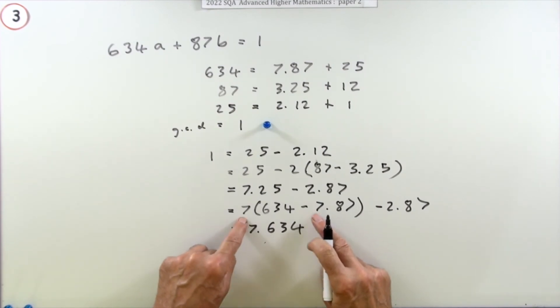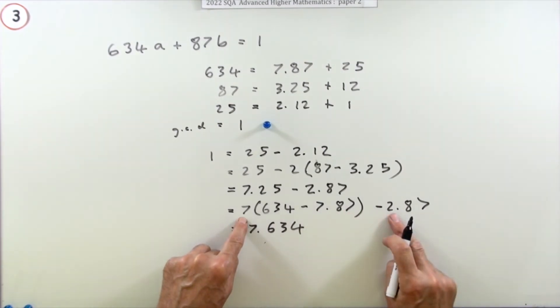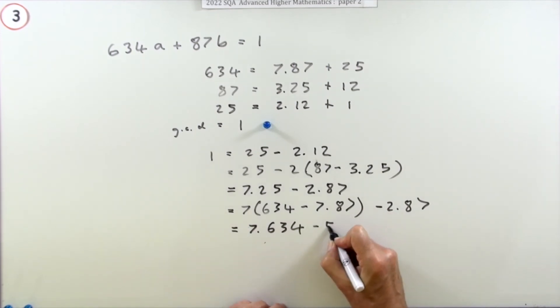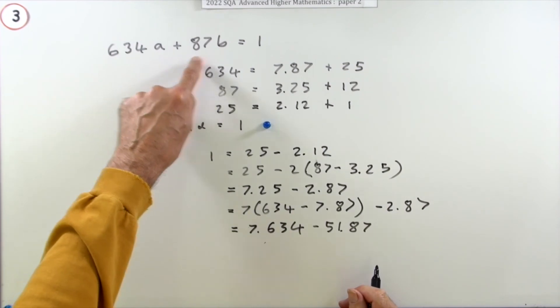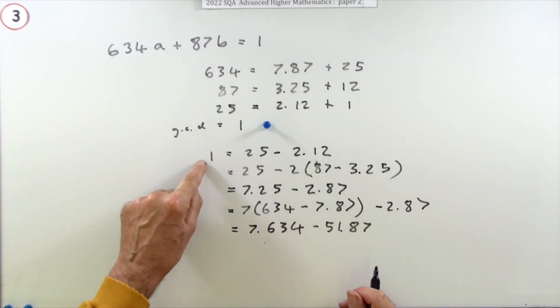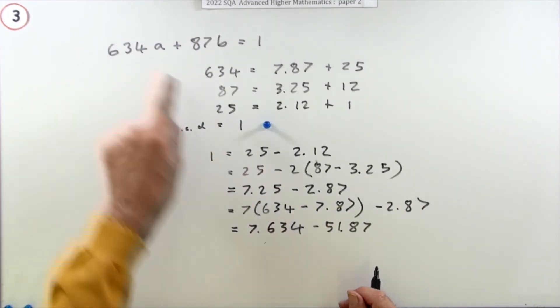I can tidy that up. I've got 7 lots of 634. That's minus 49 minus another 2, which is minus 51 lots of 87. But now you've got what you want. This says what can make one - one can be made by this number of those.